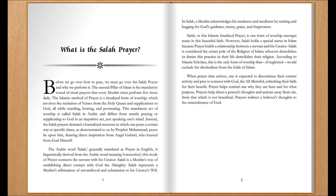What is the Salah prayer? Before we go over how to pray, we must go over the Salah prayer and why we perform it. The second pillar of Islam is the mandatory round of ritual prayers that every Muslim must perform five times daily. The Islamic method of prayer is a ritualized form of worship, which involves the recitation of verses from the Holy Quran and supplications to God, all while standing, bowing, and prostrating. This mandatory act of worship is called Salah in Arabic, and differs from merely praying or supplicating to God in an impulsive act, just speaking one's mind.